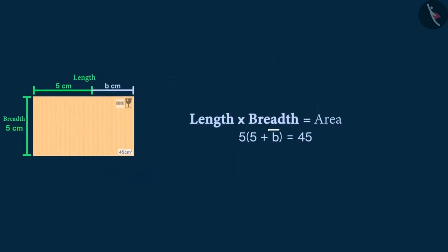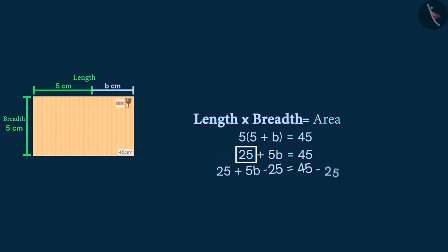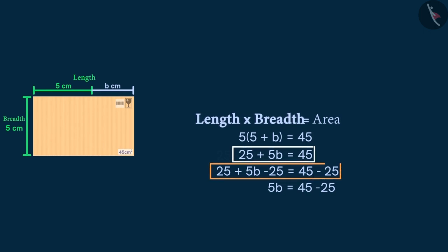Here we will have to solve this equation to get the value of the variable b. So let's go ahead with our equation. This is how we can expand our equation. Now we will have to subtract 25 from both sides so that we can eliminate 25 from the left hand side of the equation. On doing so we get this new equation.